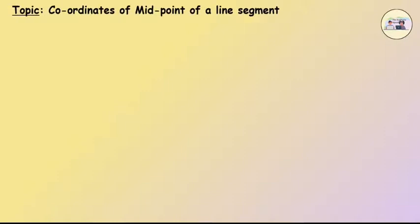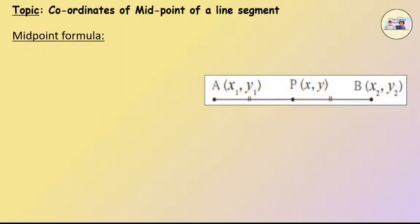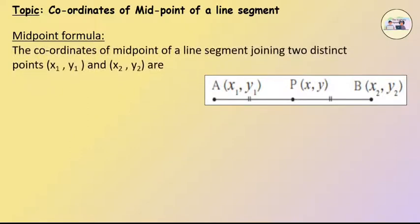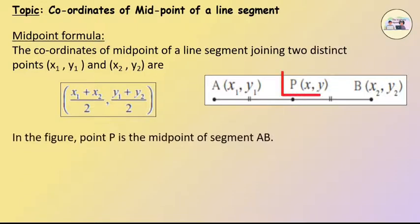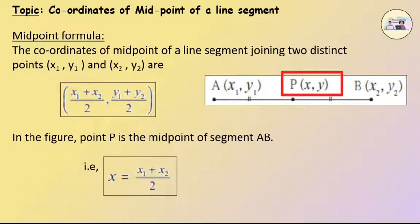Coordinates of Midpoint: To find the coordinates of the midpoint of a line segment, we can use the midpoint formula. That is, the coordinates of the midpoint of a line segment joining two distinct points (x1, y1) and (x2, y2) are (x1 + x2)/2 comma (y1 + y2)/2. In the figure, point P is the midpoint of segment AB, that is x = (x1 + x2)/2 and y = (y1 + y2)/2.